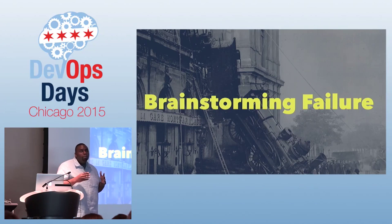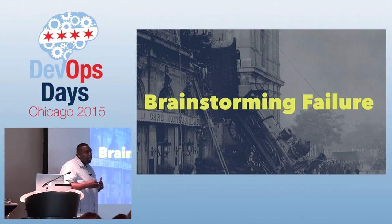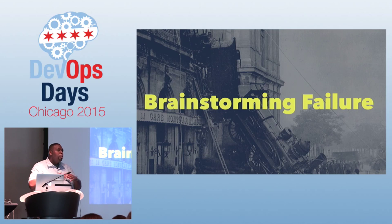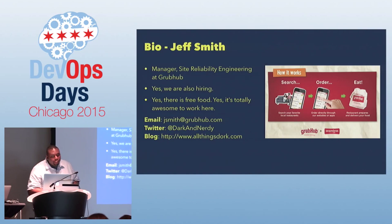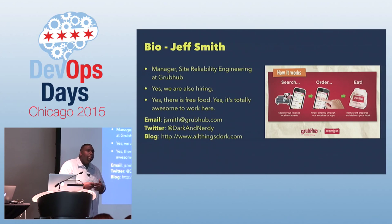We have to figure out what do these failure states look like and how do we monitor for them appropriately. So we're going to talk about a process that we use at GrubHub that we've been piloting with a lot of our development groups, really just to get an idea of how can we come up with the best way to assess and prioritize the different failure modes, their detection, and their mitigation, preferably automatically. My name is Jeff Smith. I'm the manager of the site reliability engineering team at GrubHub.